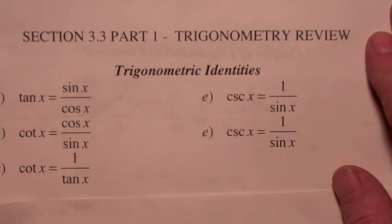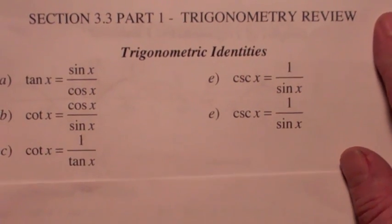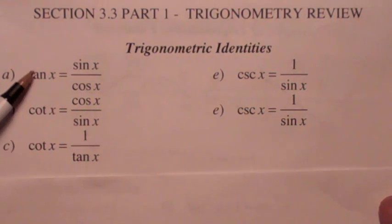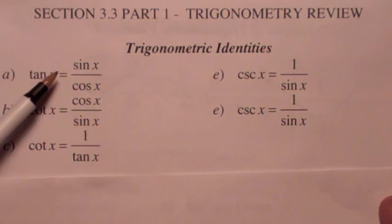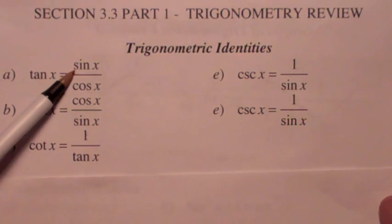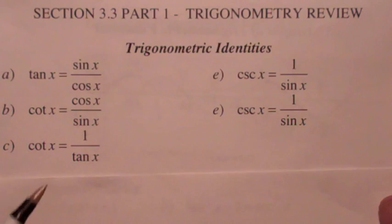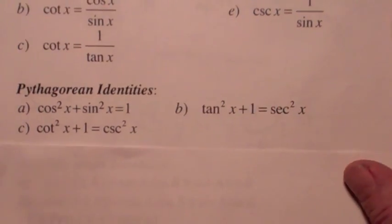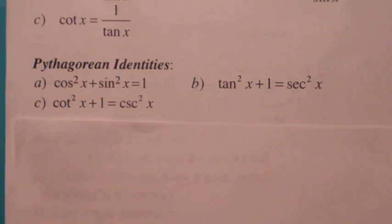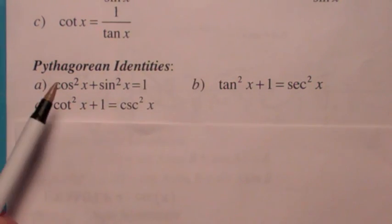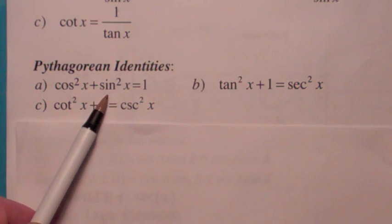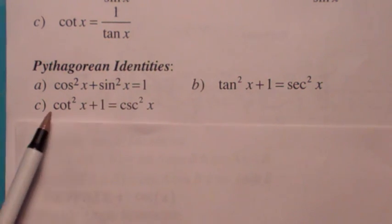You should know the basic identities. Remember, these can be thought of as points on the unit circle. The tangent is the ratio of the y coordinate over the x coordinate, and so on. You should know the Pythagorean identities — this is just saying that x squared plus y squared equals one on the unit circle.